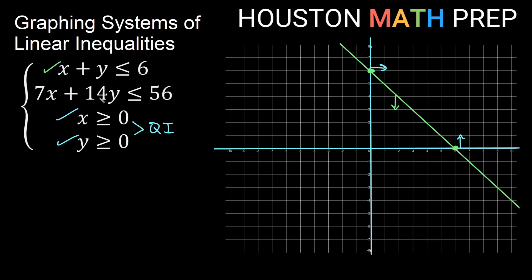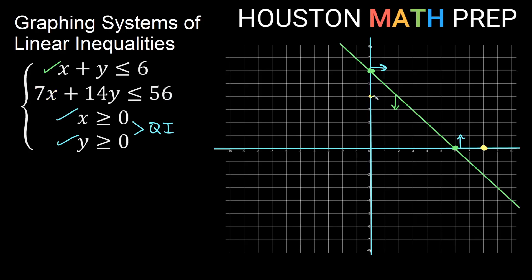For 7x plus 14y less than or equal to 56, finding the x-intercept: zero out y, giving 7x equal to 56. Dividing by 7 gives x equal to 8, so plot 8 on the x-axis. For the y-intercept, zero out x: 14y equal to 56. Dividing by 14 gives y equal to 4, so plot 4 on the y-axis. Now I have two points and can graph that line.